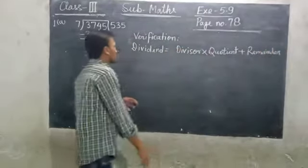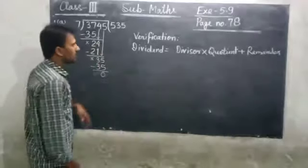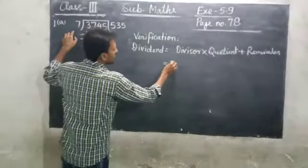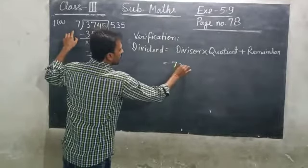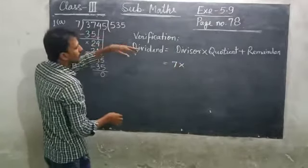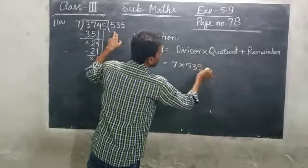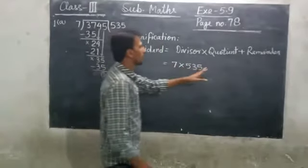So dividend equals - the divisor is 7, quotient is 535, remainder is 0. Add 0.